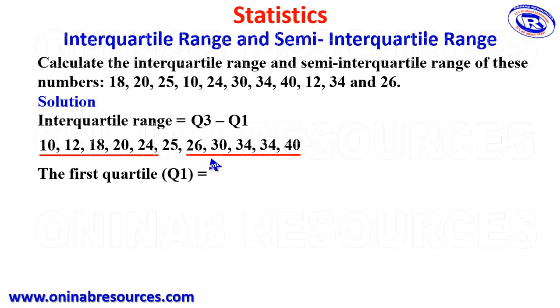Now to get our first quartile, we look at the first part of the division, the first five numbers. Also within the first five numbers, we look at the middle number. If you look at it, the middle number here is 18, because we are left with two numbers to the right of 18 and two numbers to the left of 18. Therefore, the first quartile is 18.